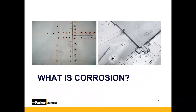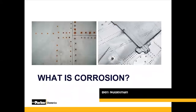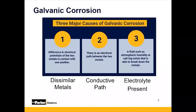Diving right in, we're going to start with what corrosion is and some of the factors that impact it. The main topic we're talking about today is galvanic corrosion. There are three major causes of galvanic corrosion. The first is that you have to have a difference in electric potential between two different metals, sometimes known as dissimilar metals — when you have two different types of metals in a system or an enclosure.